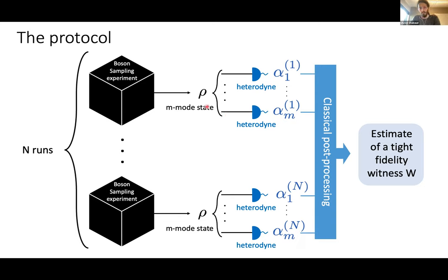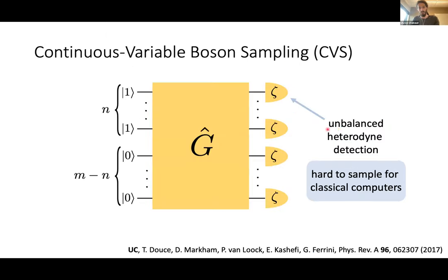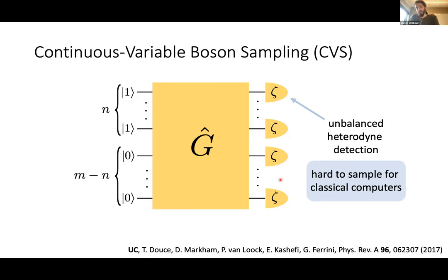The remaining issue is that the quantum speedup experiment still requires photon number detection, meaning you need to trust both heterodyne detection for verification and photon number detection for the demonstration. There is a way around this: consider a variant model where photon number detectors are replaced by unbalanced heterodyne detection — heterodyne with an unbalanced beam splitter. We showed this also gives output probability distributions that are hard to sample for classical computers, so you can switch between verification and quantum speedup demonstration just by adjusting the reflectivity of the beam splitter.